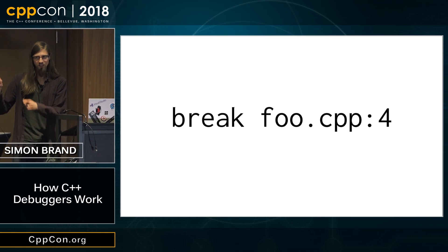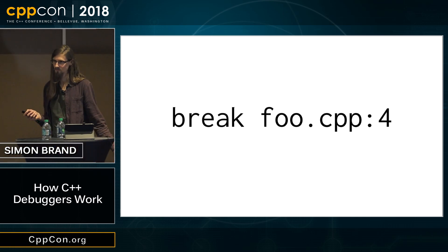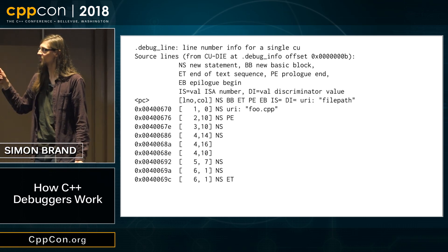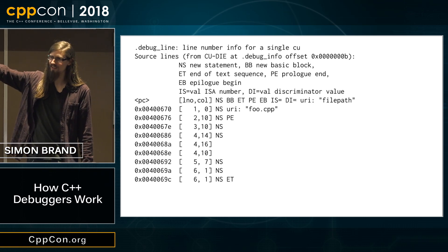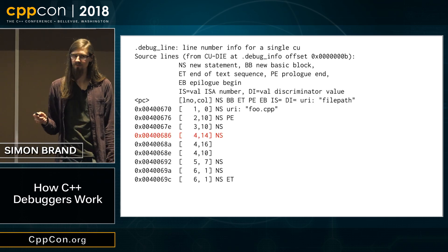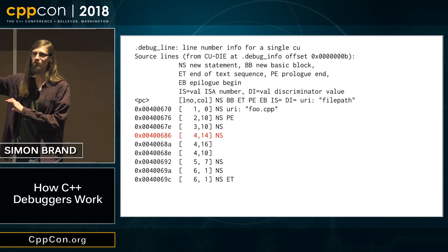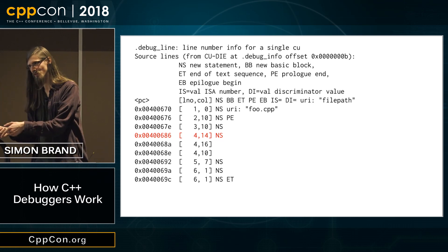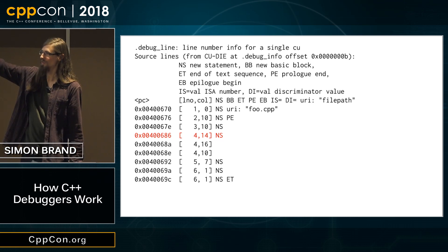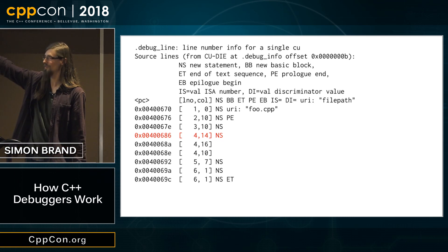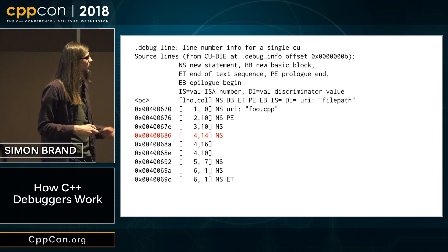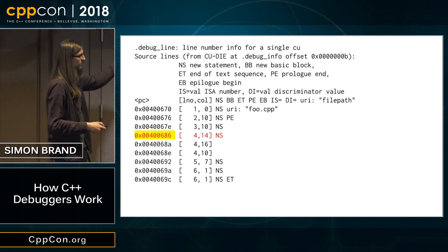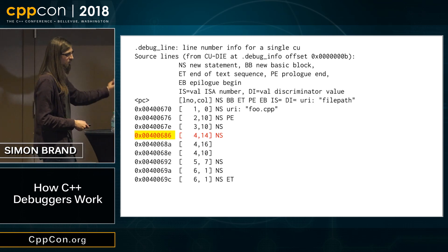This is the line table information. We can see there is line four, and there are fewer entries for it — this could be because it's one line with multiple expressions generating multiple assembly instructions. We want to set a breakpoint on the start of the statement — we look at the NS flag and set a breakpoint there at the address on the left. Going from instructions to source is just a case of looking at the DWARF and mapping it back.